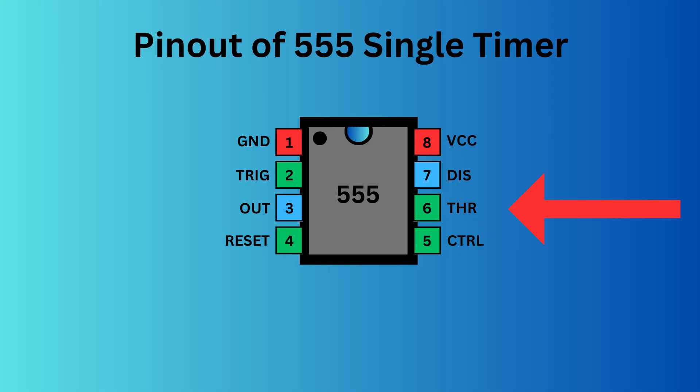Pin six, the threshold pin, monitors the voltage of the capacitor in the circuit. Pin seven, the discharge pin, manages the timing capacitor's charge and discharge cycle. Pin eight, known as VCC, supplies power to the IC.